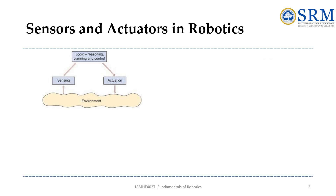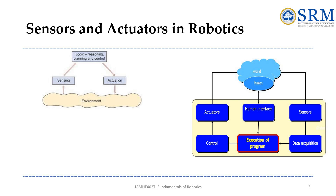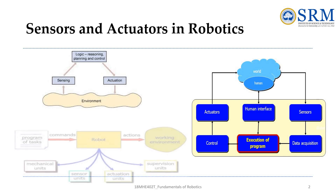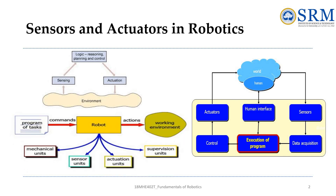This is the typical robot system where, through the sensors, data are acquired, the task is given and executed through control, and actions are performed using the actuators. The environment has both a human interface, and this is the entire robot system with its functional units: mechanical units, sensor units, actuation units, and supervision units.